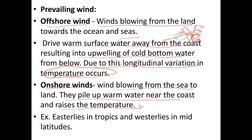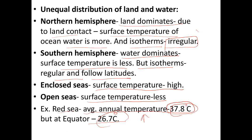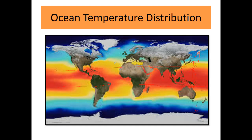Offshore winds cause cold water to constantly come to the surface, so temperature drops in those areas. Onshore winds increase temperature and offshore winds decrease temperature. Examples include easterlies in the tropics, which flow from east to west, and westerlies in mid-latitudes, which flow from west to east. These wind patterns affect different regions in different ways depending on the location of continents.